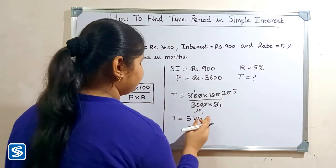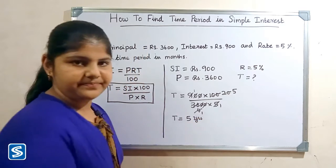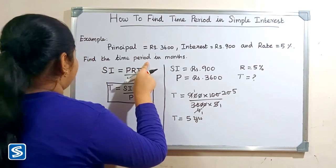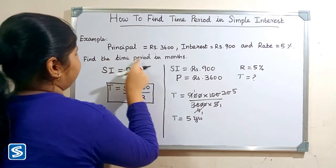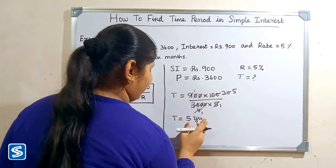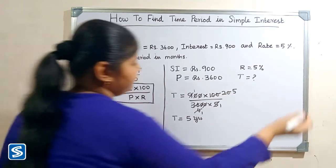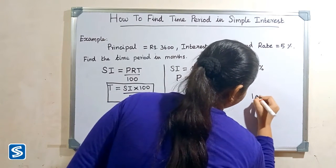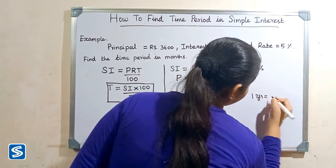Here you can see the time period is in years. In this question they had asked find the time period in months, so now we have to convert this 5 years into months. We already know that 1 year is equal to 12 months.